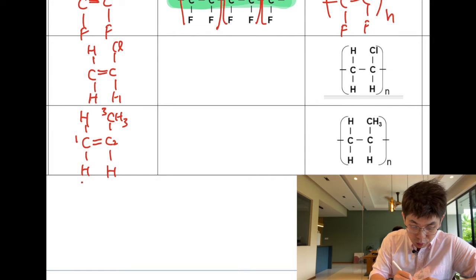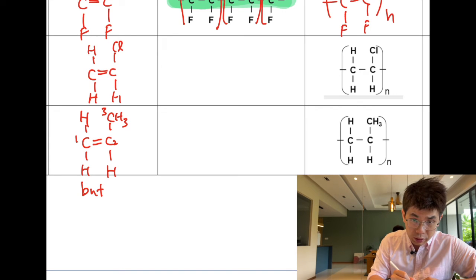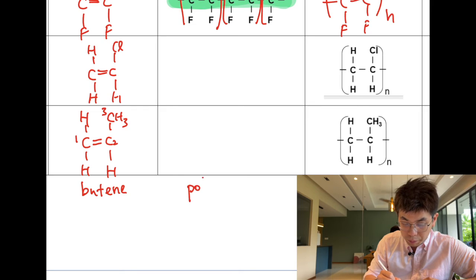You can pause the video and think about it. Over here we have one, two, three carbons so this is a butene. There is a double bond so it's butene. If this is butene, the polymer would be polybutene.